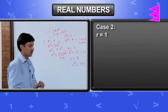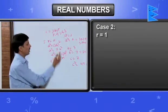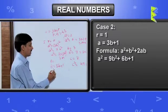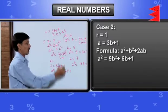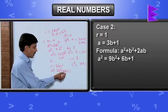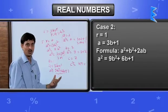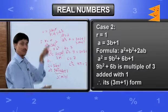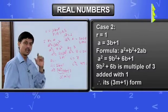If I take case 2, r equals 1. If I use this, a is going to be 3b plus 1. If I square it, I will get a square equals 9b square plus 6b plus 1, using a square plus b square plus 2ab. This part is the multiple of 3 and added by 1. This is again the multiple of 3 plus 1. In the first case, it was the square of number plus 0. In the second case, it is the square of number plus 1.